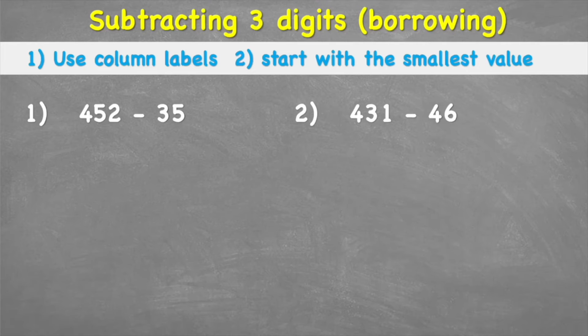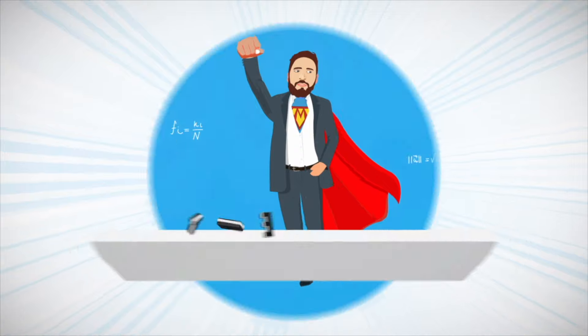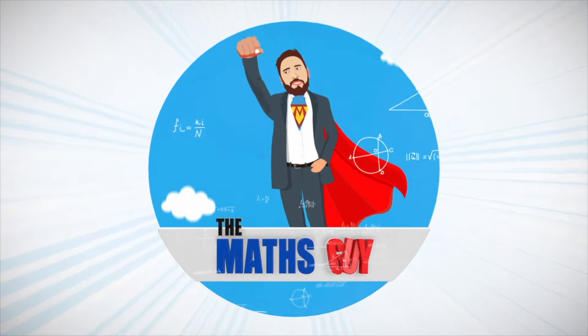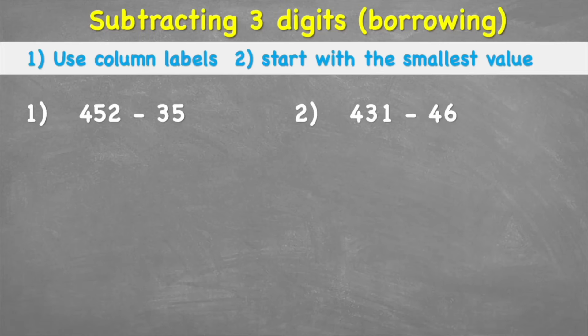Welcome back. Today we're looking at subtraction involving borrowing. We're going to use two tips: column labels and starting with the smallest value, but we need to be very careful when filling in our numbers because subtraction can get very tricky.